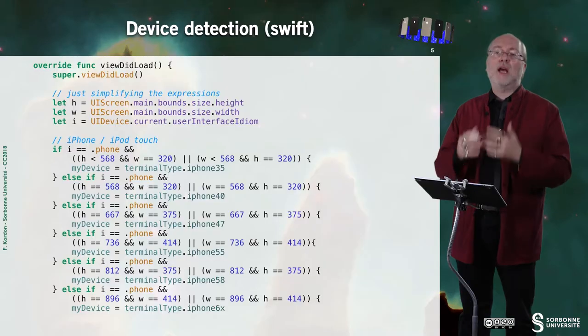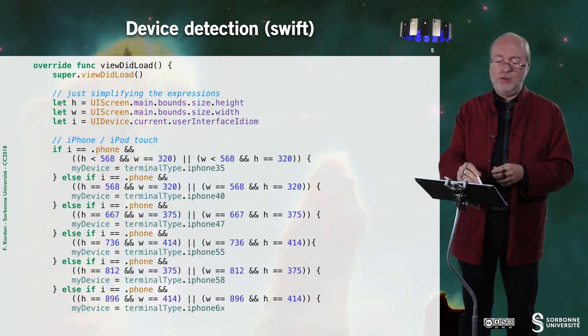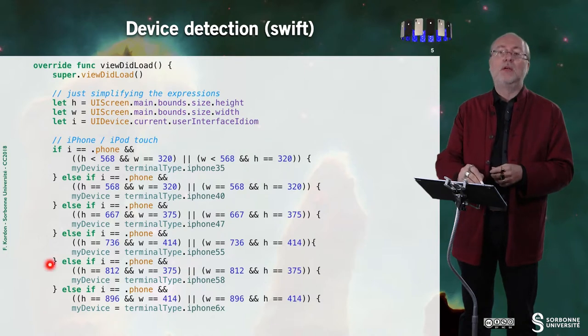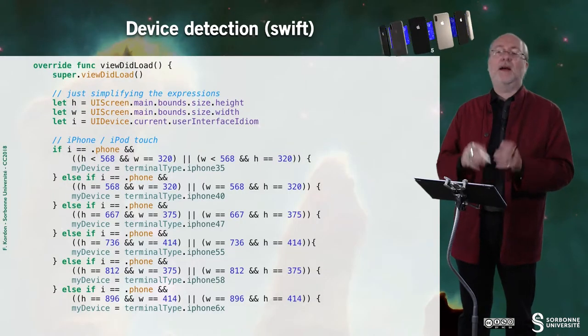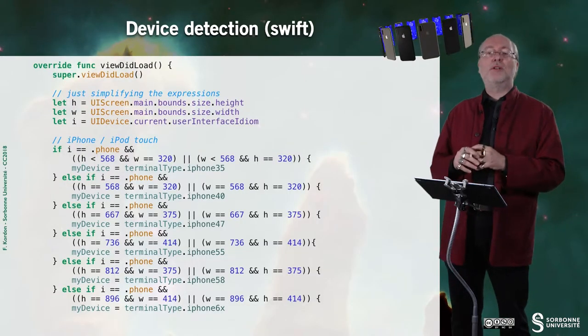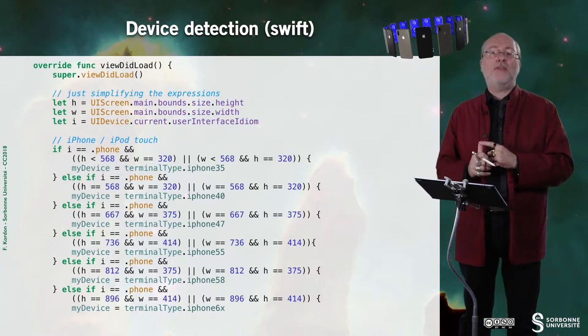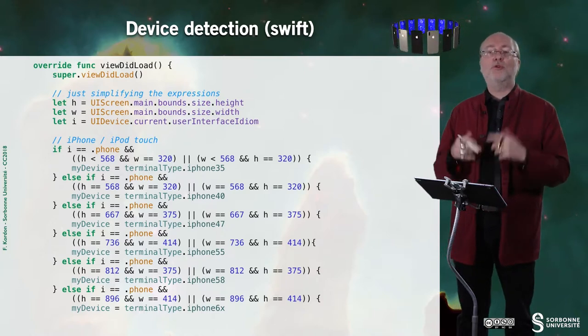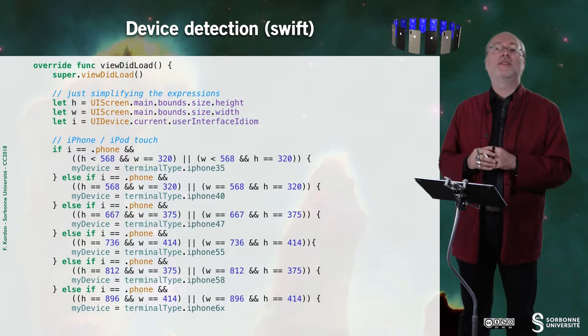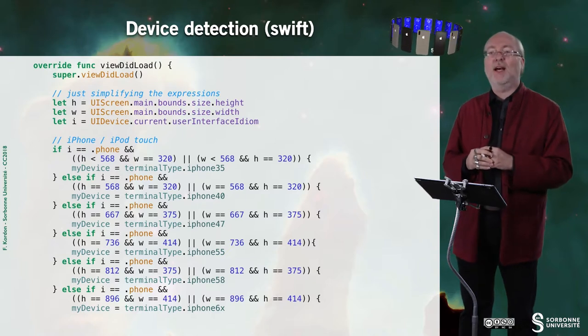It's important that you have a function for this. I put the code in viewDidLoad, but you can imagine it standing in a separate method. Here I alias some variables: the height of the screen, the width of the screen, and the user interface idiom.